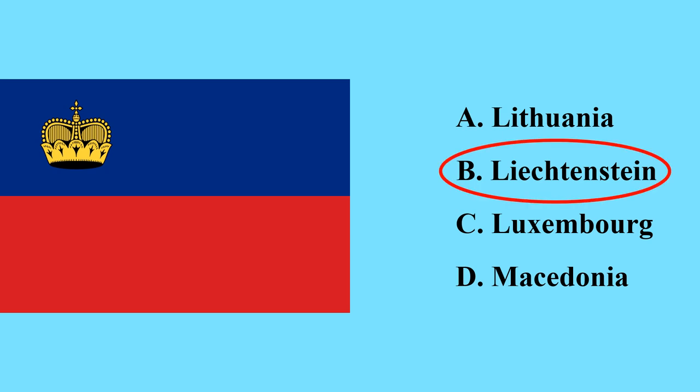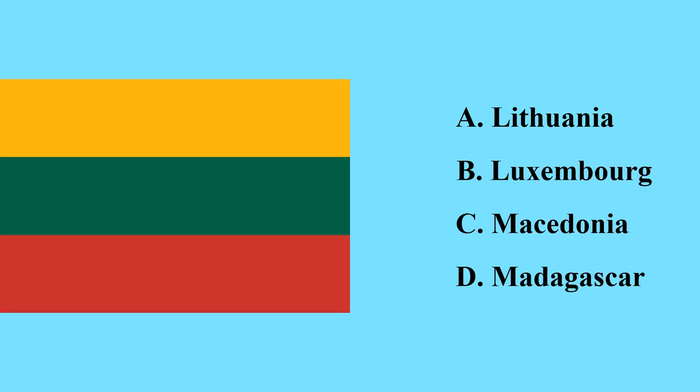This is the flag of Liechtenstein — the smallest country in Europe, surrounded by Switzerland and Austria. This is the flag of Lithuania — it is a country in Europe.